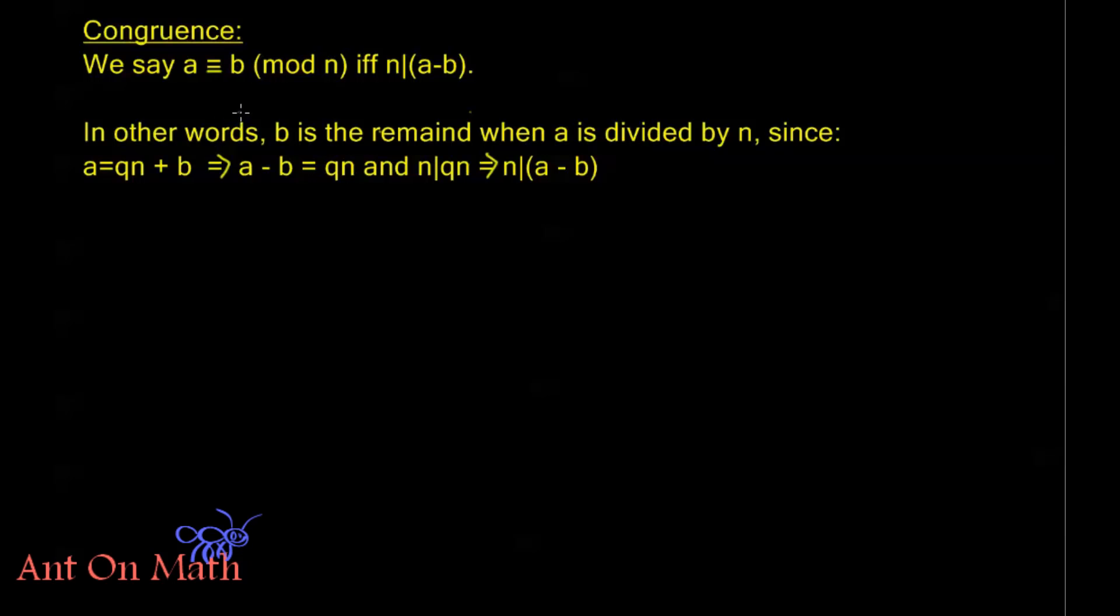But in other words, another way to think about this is that b is the remainder when a is divided by n. Since if I take our division algorithm type division process, let's say I divide a by n. So a is going to equal qn plus b. Now I can subtract b to the other side, I'm going to get that a minus b equals qn. Now of course n divides qn, so that implies that n divides a minus b. So n divides a minus b is the same as thinking of b as being a remainder of a after division by n.